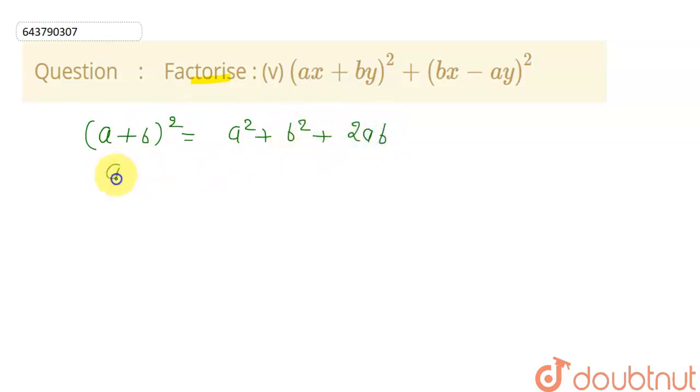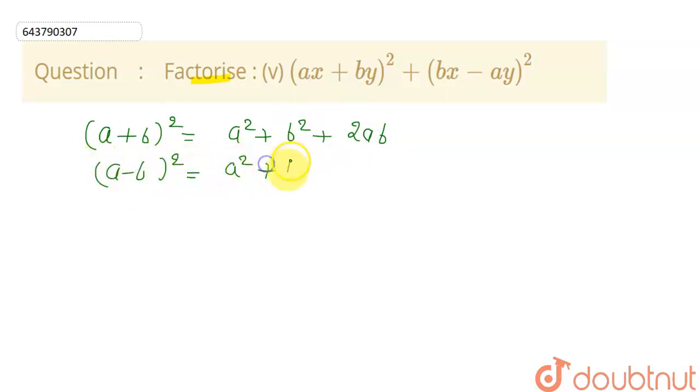And the second identity: a minus b whole square is defined as a squared plus b squared minus 2ab.